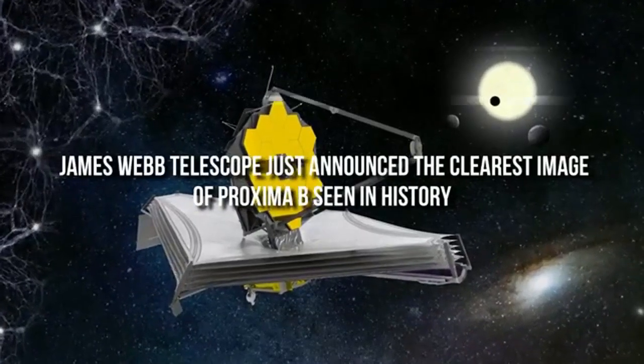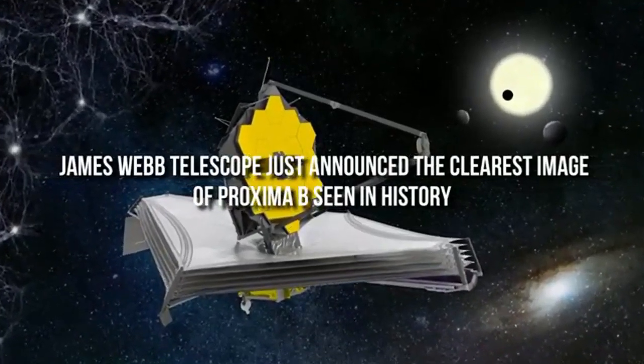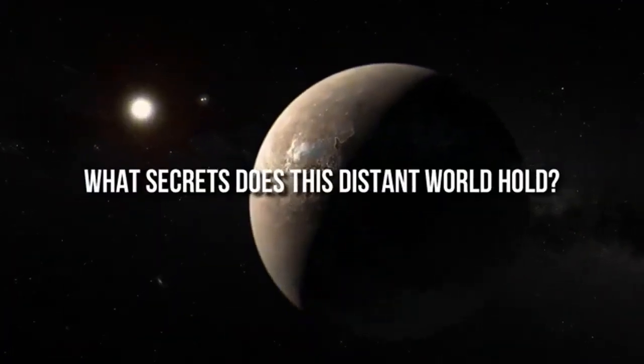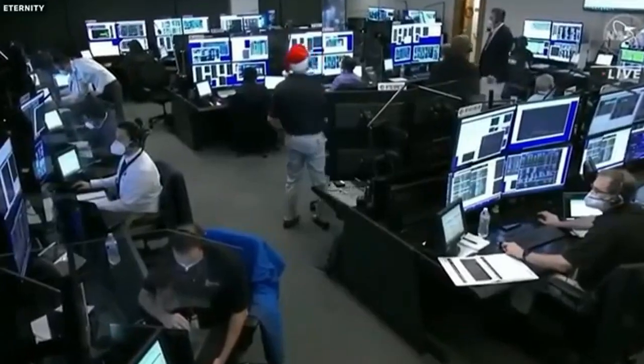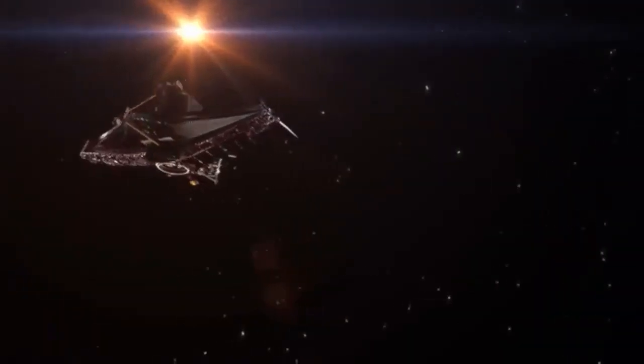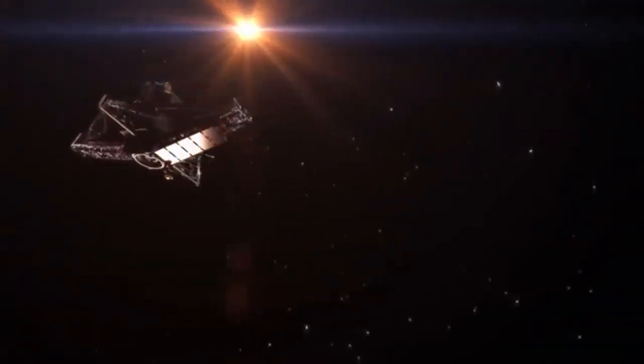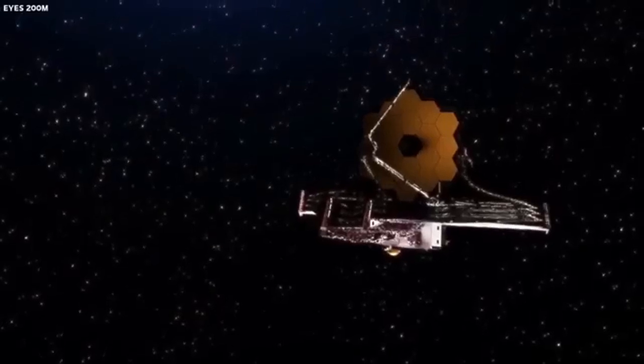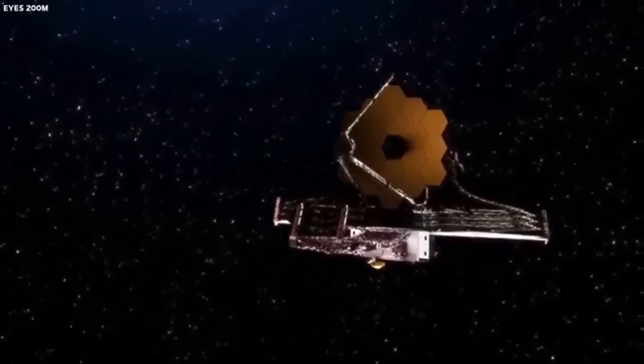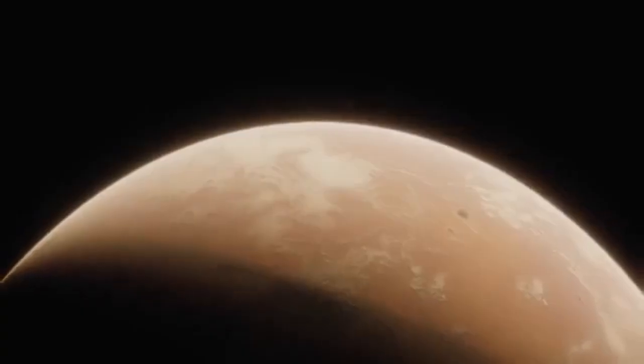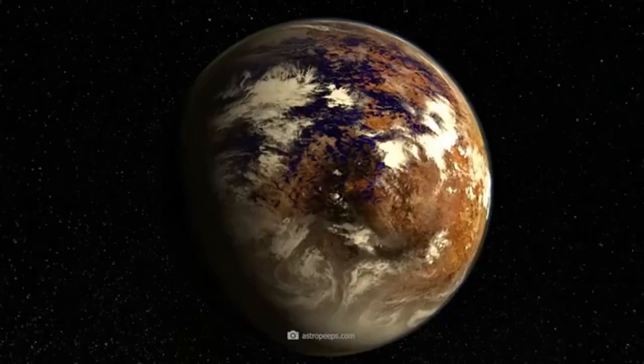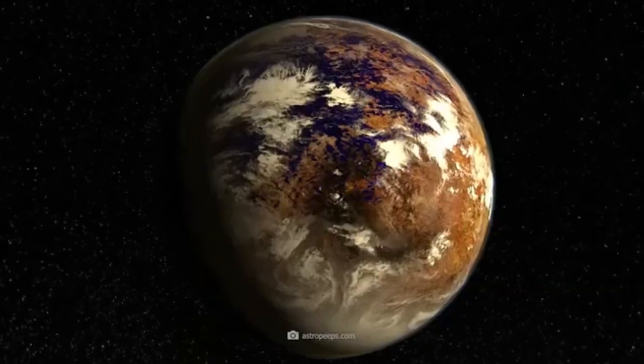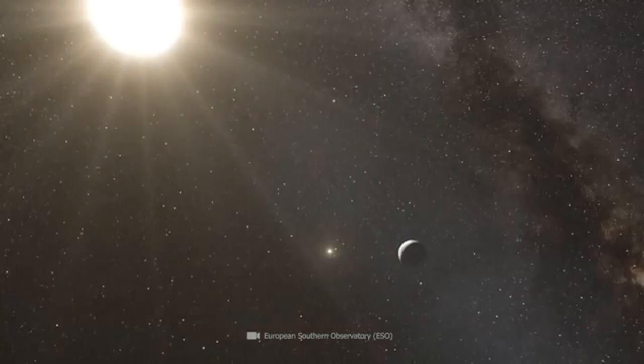In this pursuit, we have uncovered crisp, clear pictures of Proxima b, an exoplanet dancing in the gravitational embrace of Proxima Centauri. Its discovery in 2016 unlocked new dimensions in astronomical exploration, and now the clearest image of Proxima b released by the James Webb Telescope is here. It is a big deal, huge. Stick with us to see why it matters so much.